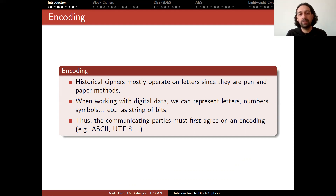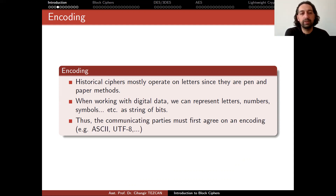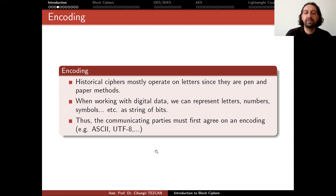Historical ciphers mostly operate on letters since they are pen-and-paper methods, so in that case you use the same language. But when working with digital data, we can represent letters, numbers, symbols, etc. as strings of bits. Thus, the communicating parties must first agree on an encoding. The ASCII table is the most famous one, which is the American standard. But this table does not contain some Turkish characters. Also, some Latin languages have letters not included in ASCII. Some Latin languages like Turkish use UTF-8 or similar encoding. In this course, we assume that each device or party has agreed on an encoding, so they can understand what they are talking about.